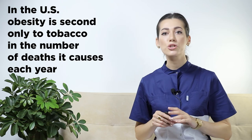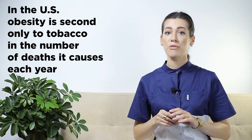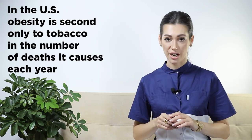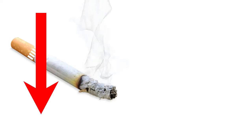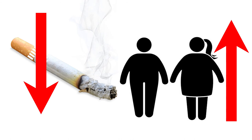In the United States, among adults under the age of 70, obesity is second only to tobacco in the number of deaths it causes each year. As tobacco use continues to decline and obesity rates continue to rise, the number of deaths due to obesity may soon exceed that of tobacco.